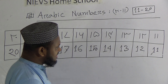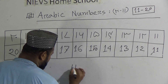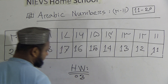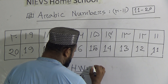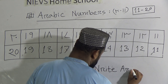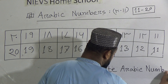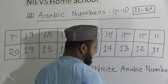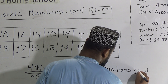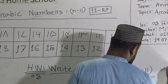Dear students, now I am giving homework based on today's lecture. Today's homework is number three. The topic of today's homework is: write Arabic numbers from ahada ashara to ishruna. Also write the date on the right side of your copy.